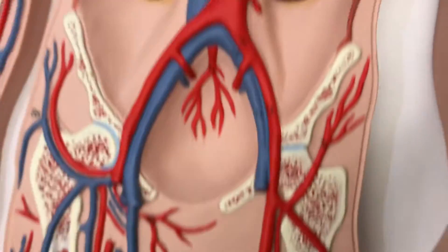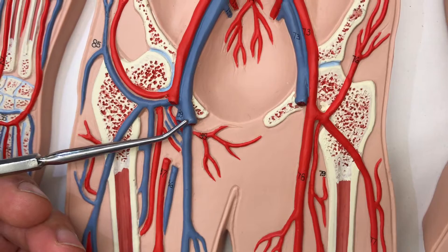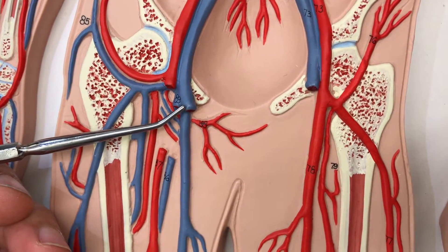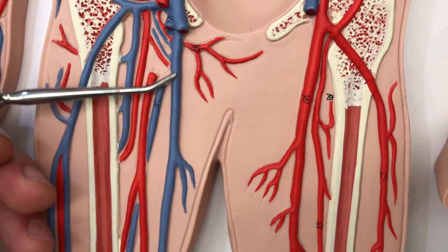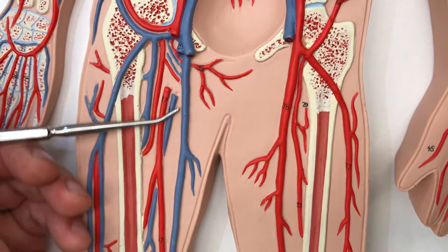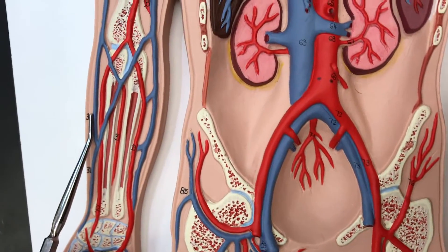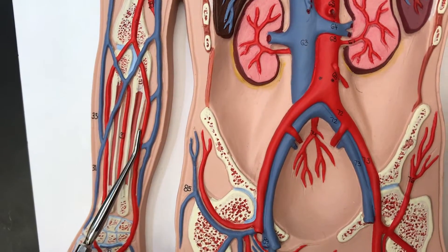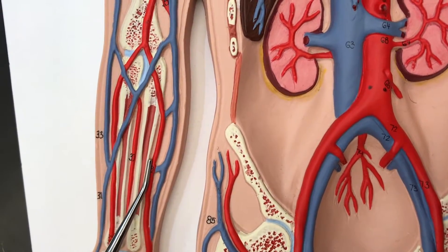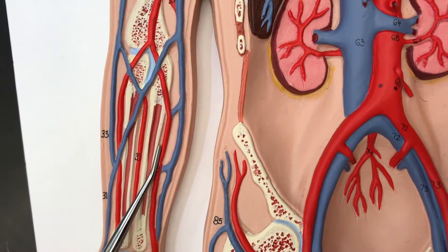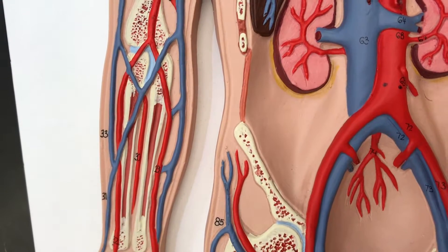Going down the leg, you have your right femoral vein, and deep to that, all the way down, this is your great saphenous vein. Over on the arm, your radial artery and your radial vein, and ulnar artery.